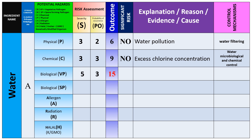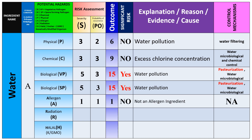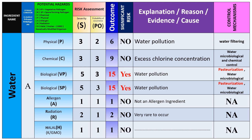For water chemical hazard, the cause is excess chlorine concentration; controls include water microbiology and chemical control programs company-wide. Water biological hazard: severity 5 × probability 3 = 15 — significant risk — due to water pollution. Controls are pasteurization or water microbiology testing. Spore-forming biological hazard follows the same scoring. Allergen is not applicable since water is not an allergen ingredient. Radiation and halal hazards are also not applicable for water.